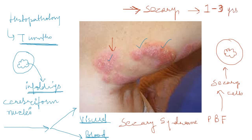In short, mycosis fungoides is the neoplastic proliferation of CD4-positive T cells within the skin, involving the dermis and the upper epidermis. I hope you liked this video. For more videos like this, please subscribe to our YouTube channel.